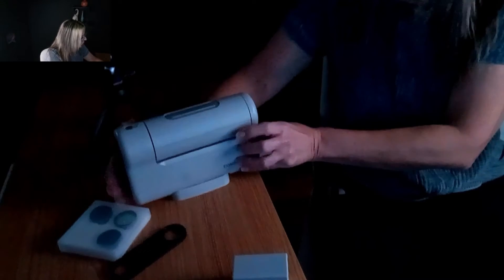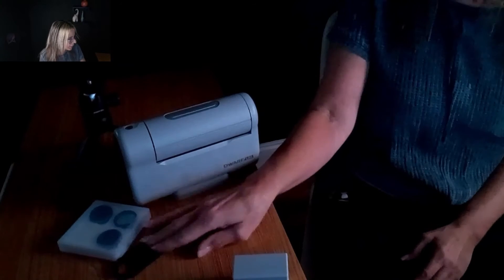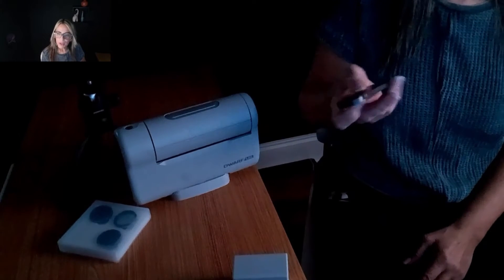This is what comes in the box: the telescope, two batteries, and a filter holder. It also comes with three filters.